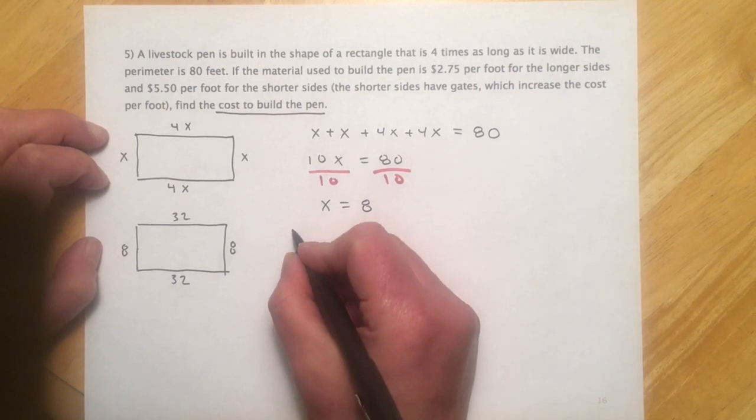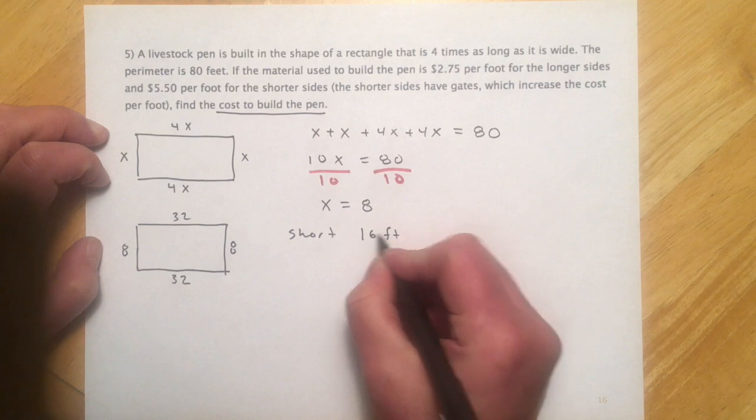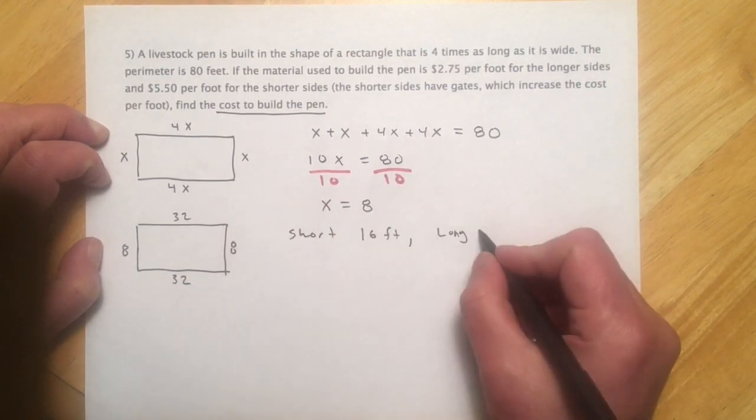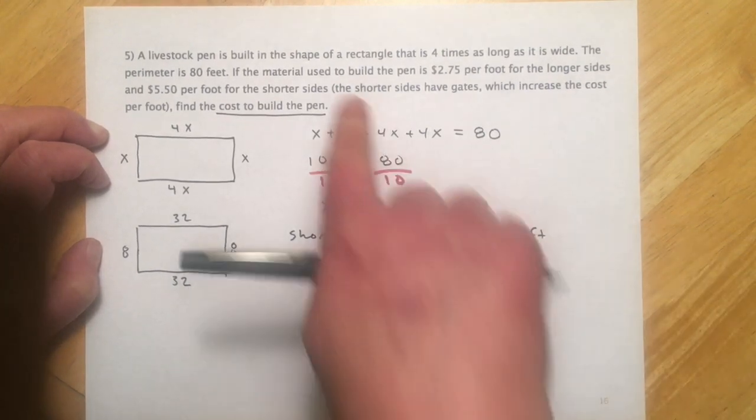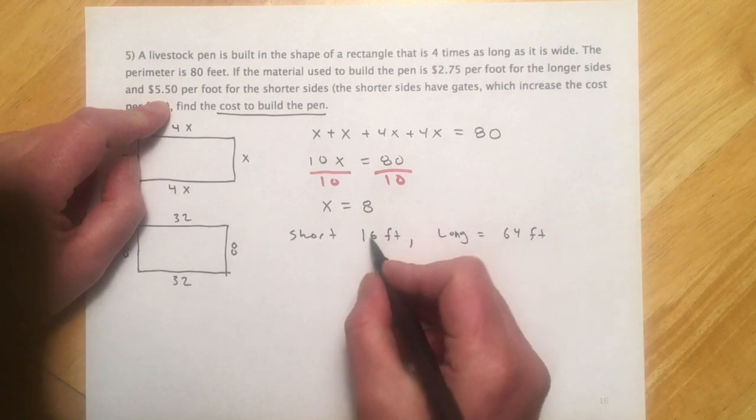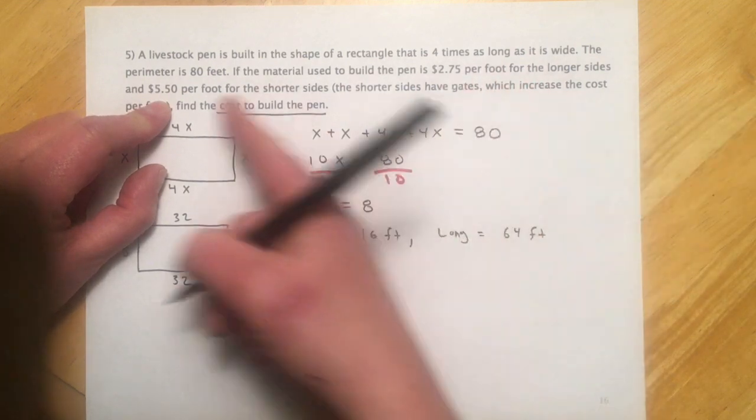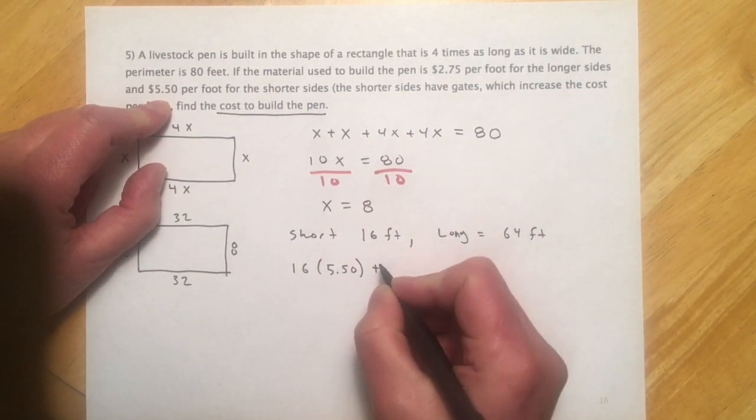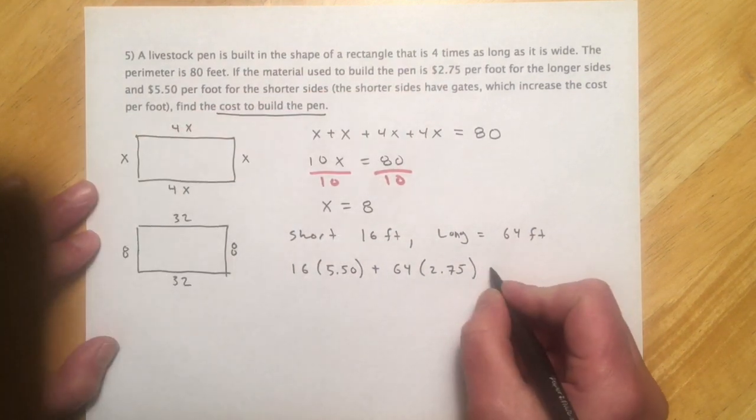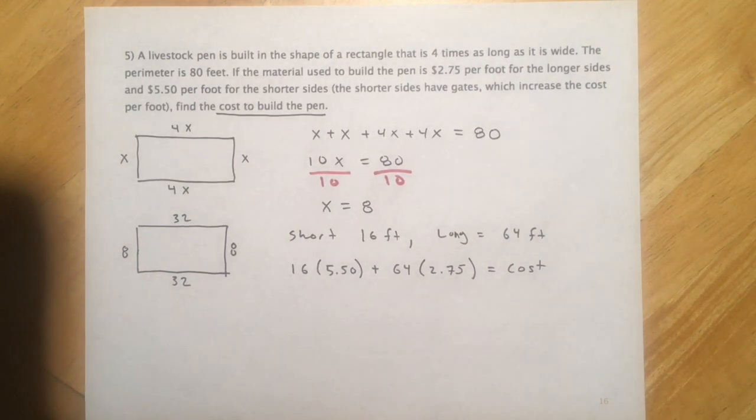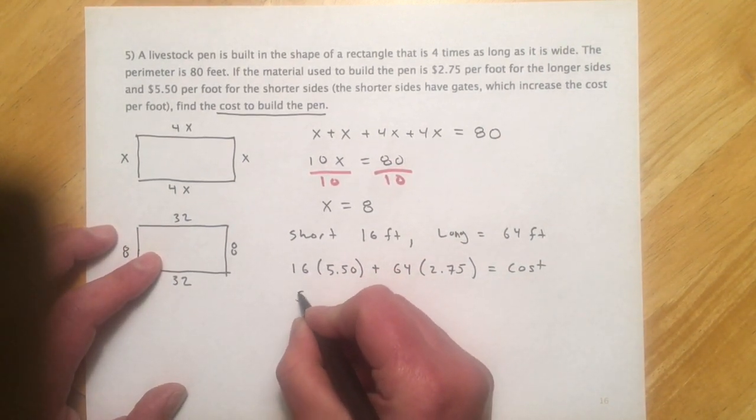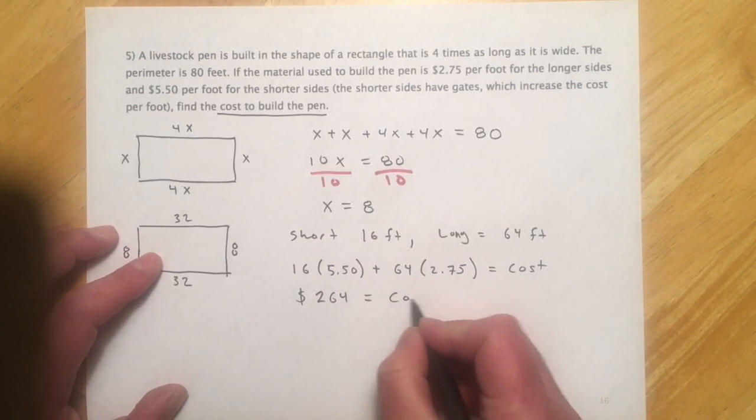So for the short sides, I have 16 feet. And then for the long sides, we have 64 feet. So coming back up here, they gave us some prices. Material used to build the pen is $2.75 a foot on the longer side, $5.50 on the short. So now we have our lengths. So we can say short side, that was the expensive one, so $5.50. And then the longer side, which was 64 feet, times $2.75. That's going to equal our total cost. If you chunk that in a calculator, I got $264 as my total cost.